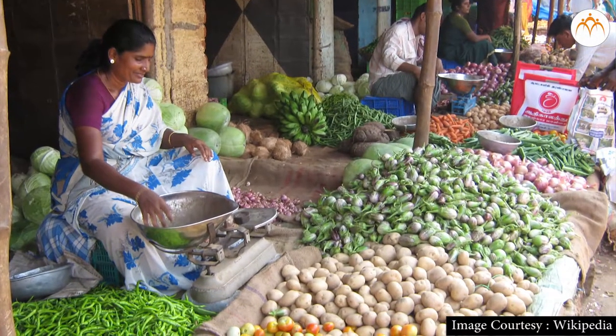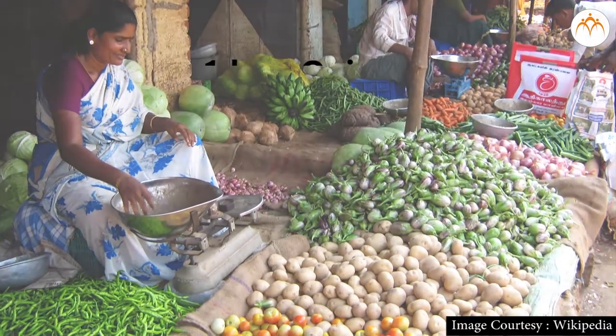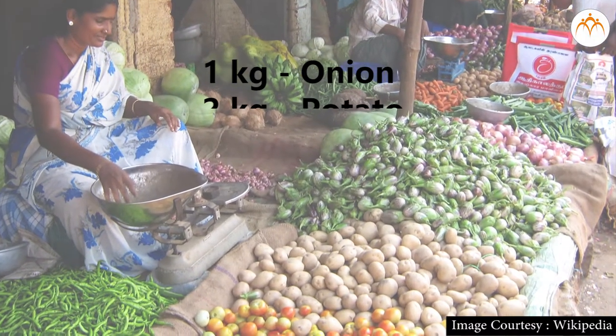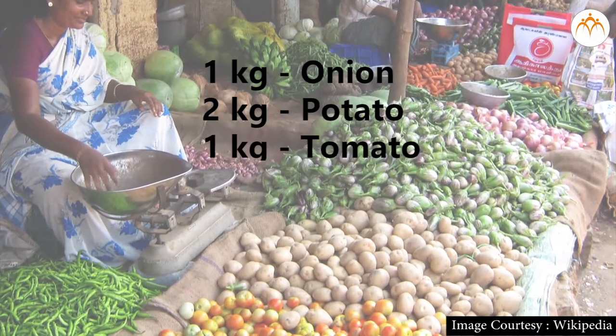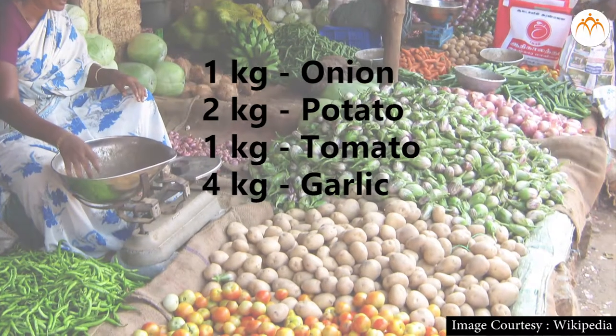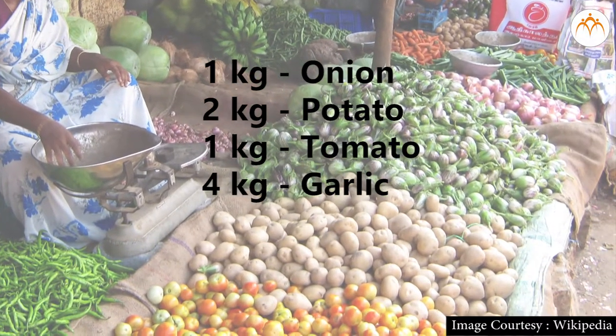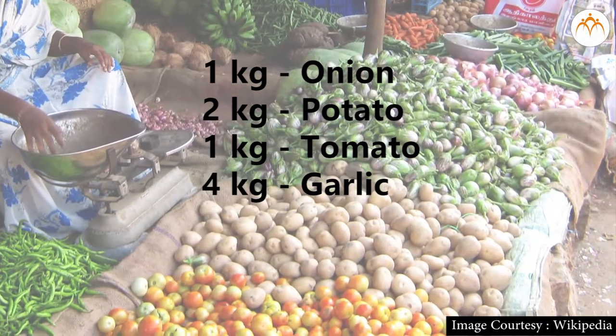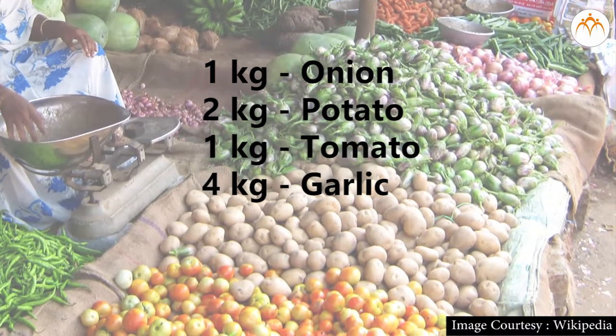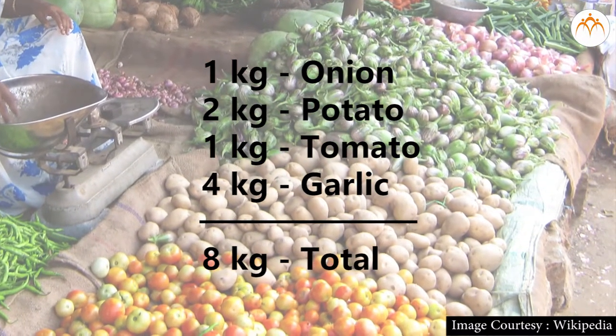If we go to the market to buy vegetables, if we buy 1 kg onion, 2 kg potato, 1 kg tomato, 4 kg garlic, then if someone asks us the total weight of vegetables, then we will just add all the weights and we will answer the weight of all the vegetables is 8 kg.